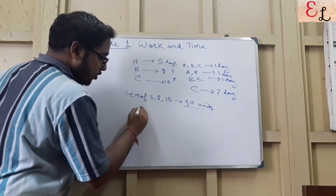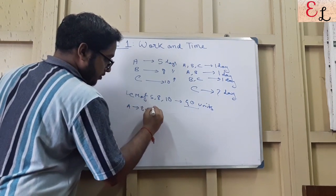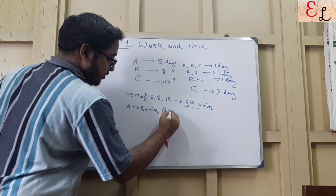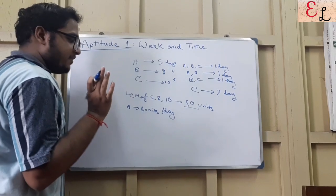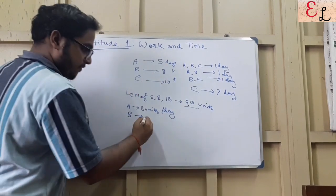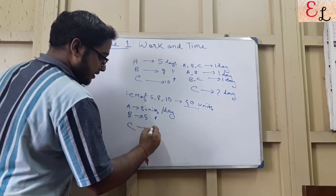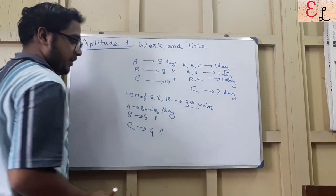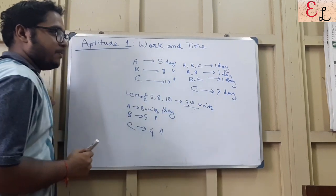A would do 8 units of work per day since it takes 40 units and 5 days to finish the work. B does 5 units of work per day, and C does 4 units of work per day. You see, all of these are whole numbers and are easier to deal with. That's why we have taken the LCM.